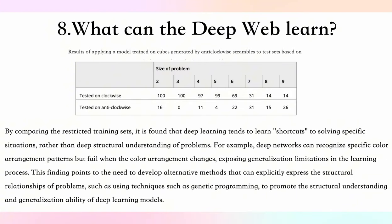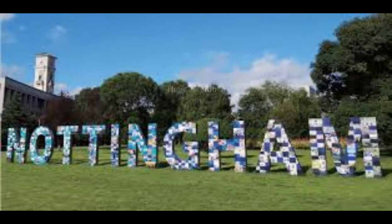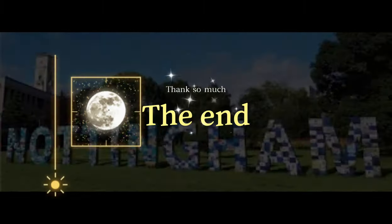In conclusion, by comparing with a restricted training set, it is found that deep learning tends to learn shortcuts to solving specific situations rather than deeply understanding the problem structure. Thank you very much.